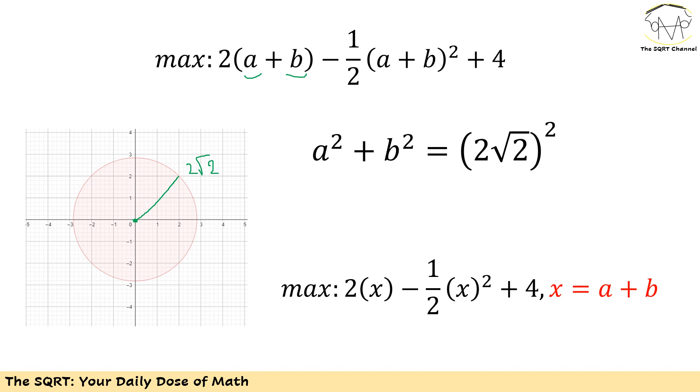Now let's go back to the value that I'm going to find. In this expression I only have a plus b. I don't have a or b alone. I have a plus b as the unknown variable. So I'm going to use x for a plus b now. This means I'm going to find the maximum of 2x minus 1 over 2 x squared plus 4. And I know that x is a plus b.